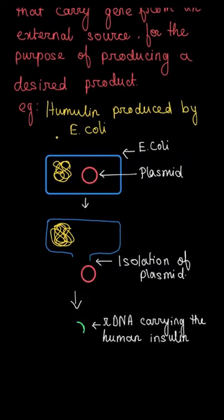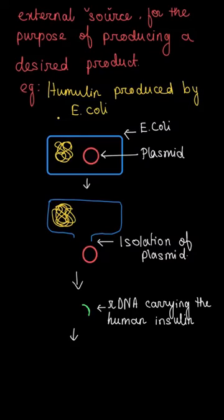Now let's see this with the help of a diagram. So this is the bacteria E. coli which has an extra chromosomal genetic material, the plasmid. Now first of all, this plasmid needs to be isolated. So this is the isolation of plasmid.